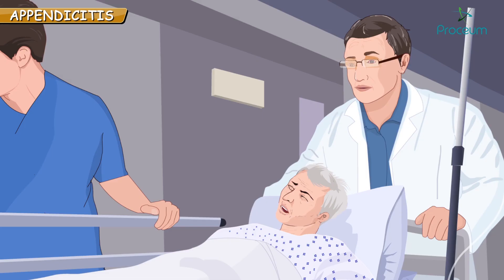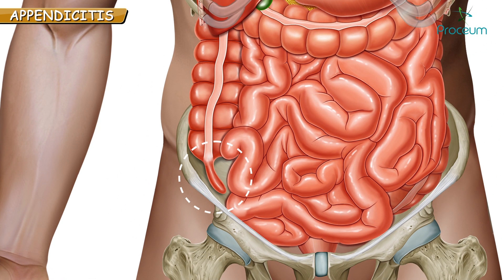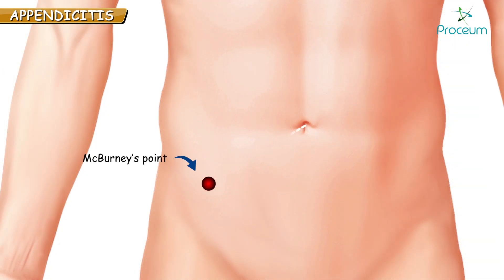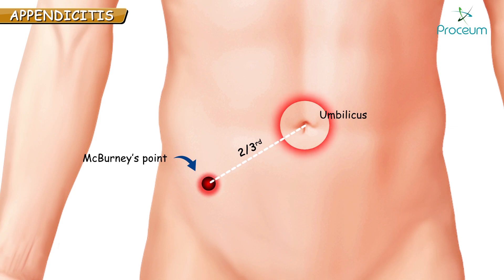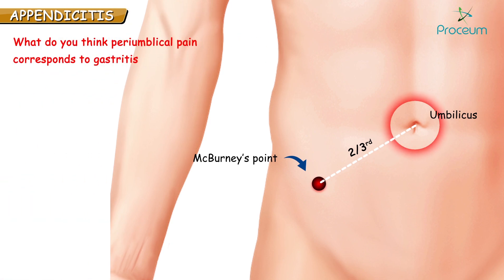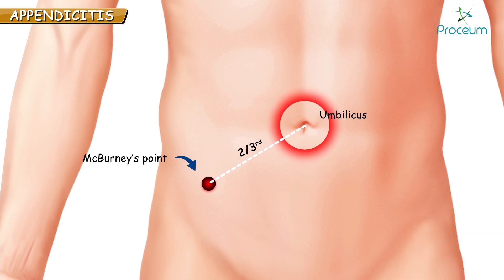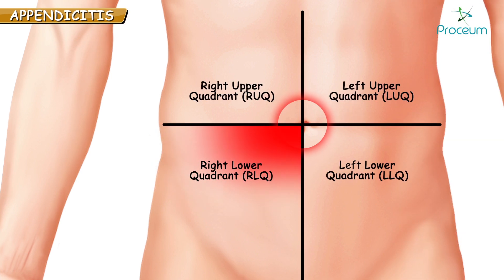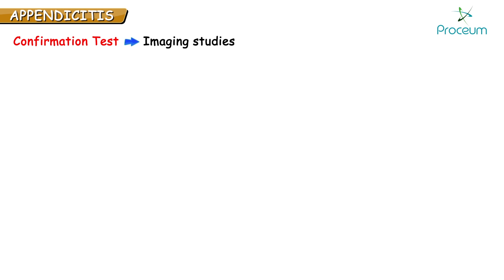Now, you are sure this is appendicitis. But suppose the attendants say the pain started at the periumbilical region and suggest it might be gastritis. Don't get confused — sometimes in appendicitis, pain may arise from the periumbilical region and migrate to the right lower quadrant. To confirm the diagnosis, you need to do imaging studies.